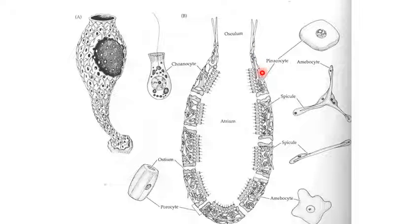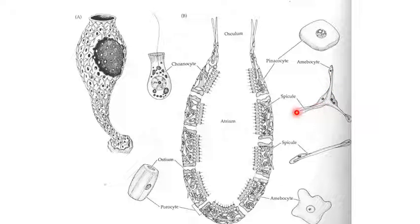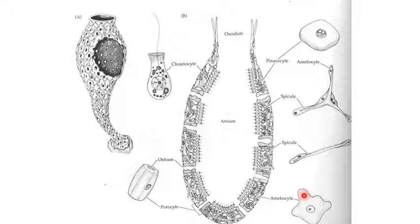On the outside, there is a flattened cell layer called pinacocytes (not listed in NCRT) which covers the entire sponge just like epithelium in our body. The spicules form the skeletal system — made of either calcareous (calcium carbonate) or siliceous (silica) material. The spicules are formed by the amoebocytes, which are mobile cells involved in digestion, reproduction, and removal of waste.